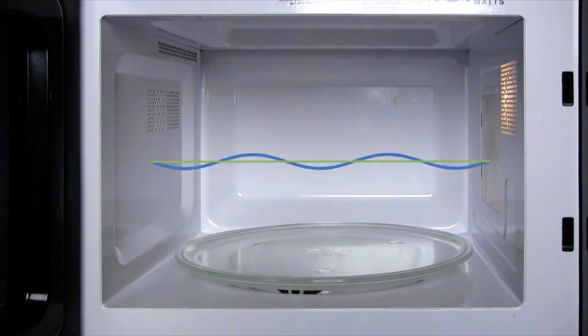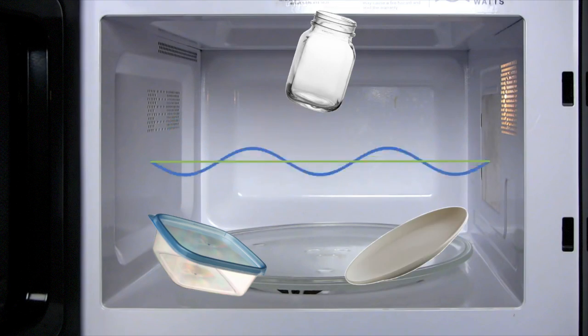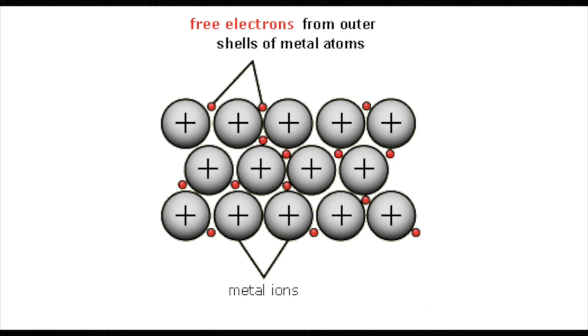You're right, microwaves can pass firmly through plastic, glass, and ceramics, because they are not conductors of electricity. But metals are packed with electrons that can move freely.